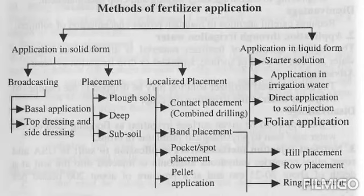Third is fertigation, which we have discussed in the previous lecture, where a pressurized irrigation system like sprinkler and drip irrigation is used for the application of fertilizer. This method is mostly used in vegetable cultivation.